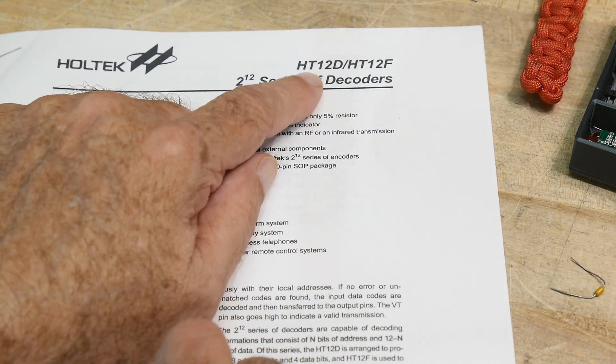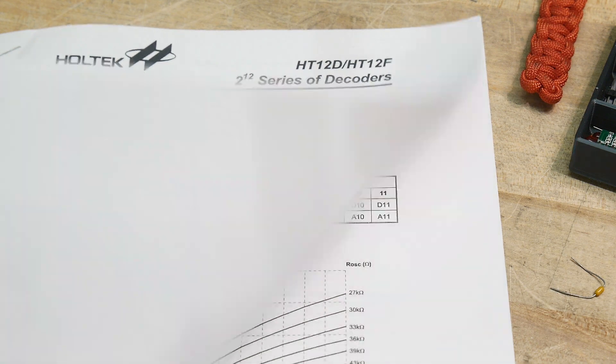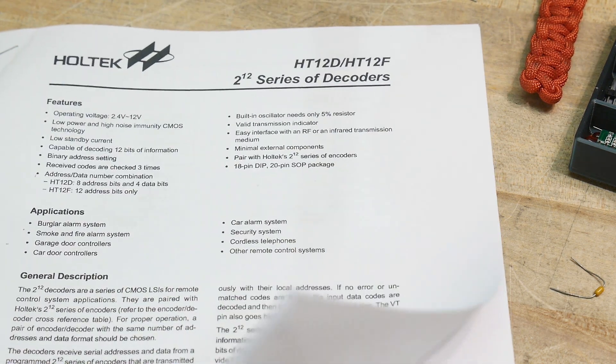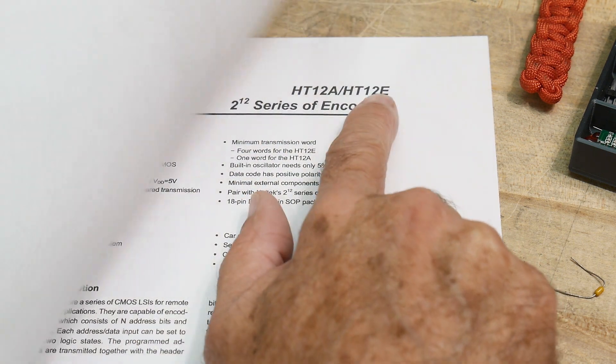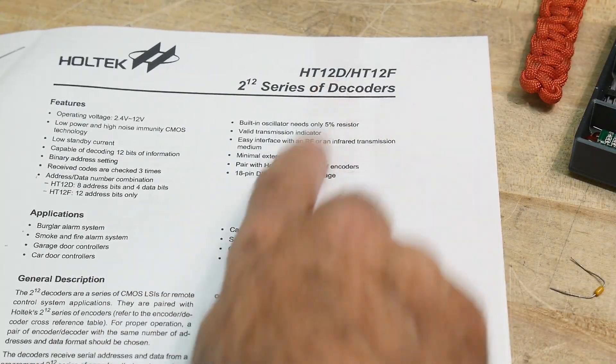So the chip of the day is an HT12D. Actually, it's two chips of the day: HT12D and an HT12E. The E is an encoder and the D is a decoder.